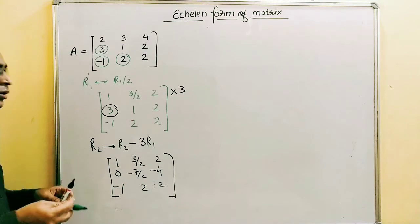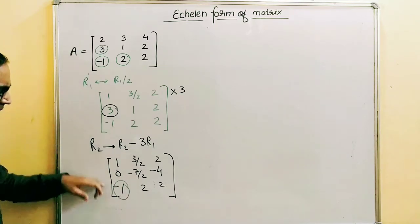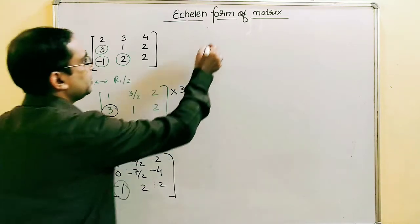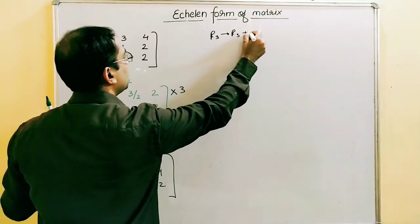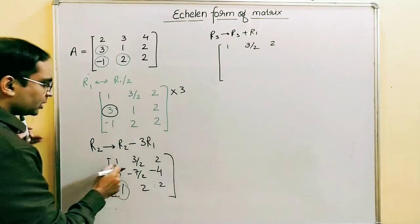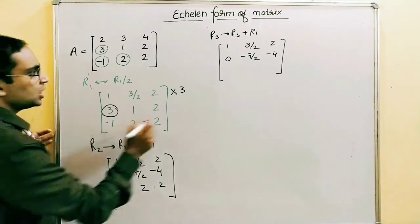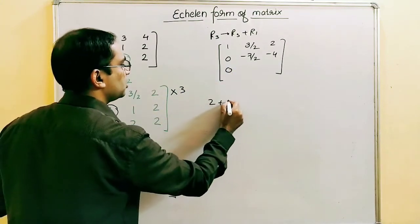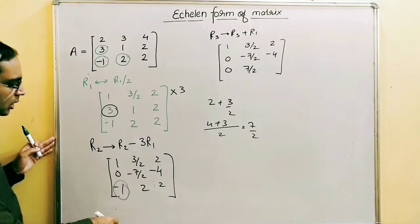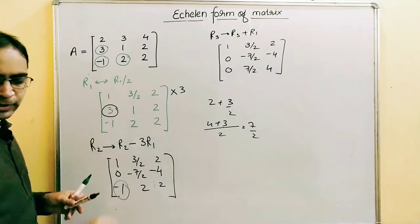Next we convert the element in the first column of row three to zero. Since it belongs to the first column, we operate with the first row. The operation is R3 → R3 + R1. Row one stays [1, 3/2, 2] and row two stays [0, −7/2, −4]. For row three: −1 + 1 = 0; 2 + 3/2 = 7/2; 2 + 2 = 4. So row three becomes [0, 7/2, 4]. All elements of the first column are now zero.